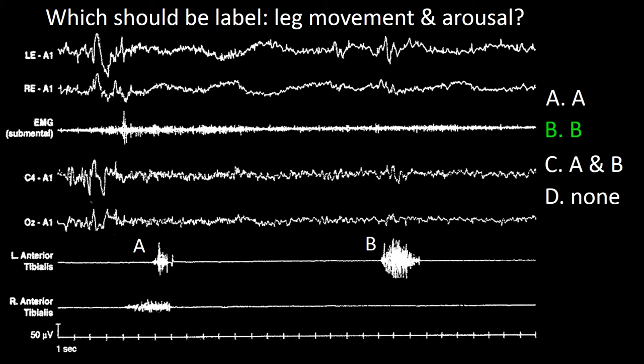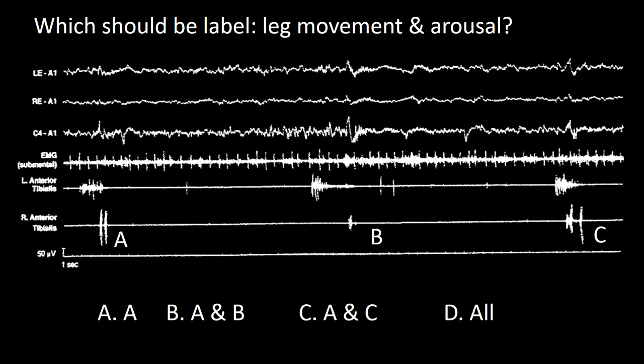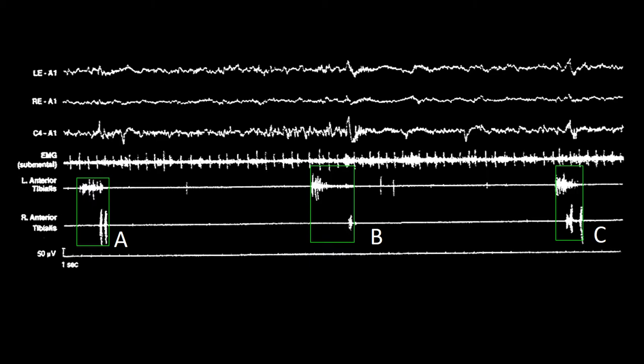Question: Which should be labeled a leg movement and arousal — A, A and B, A and C, or all? A green box highlights the relation between adjoining leg movements. A different green box on the arousal shows they are either within 500 milliseconds of each other or overlapping. Hence the answer is D — all.